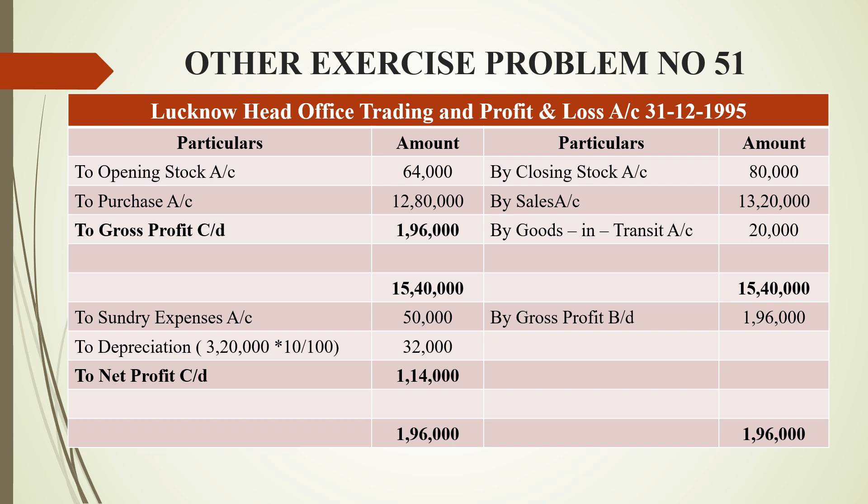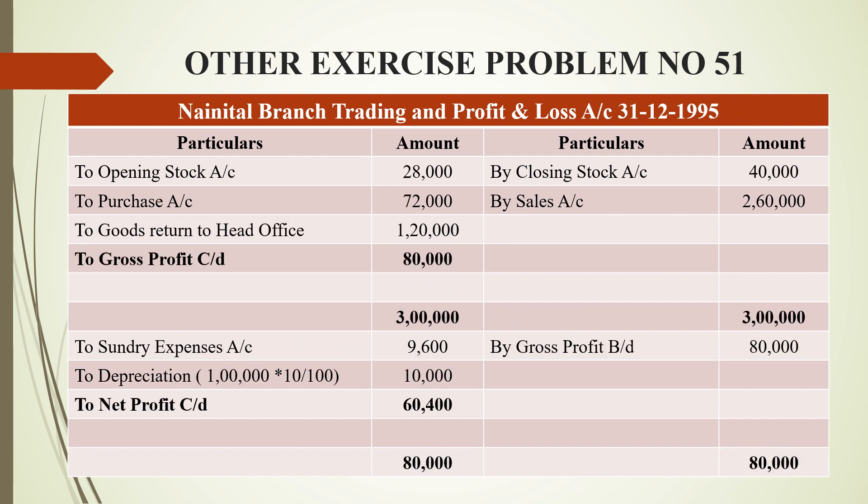Bringing gross profit of 1,96,000 down to the profit and loss account on the credit side, the debit side has sundry expenses of 50,000 and depreciation on fixed assets of 3,20,000 at 10%, which is 32,000. The balancing figure gives a net profit of 1,14,000 rupees, with a grand total of 1,96,000 on both sides.